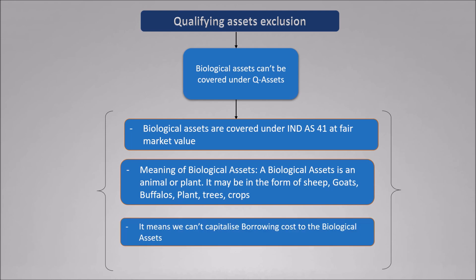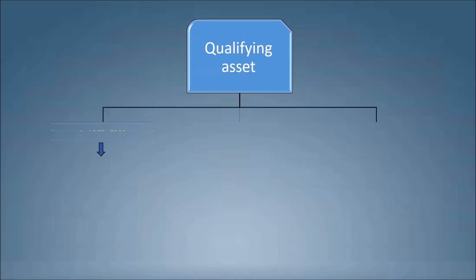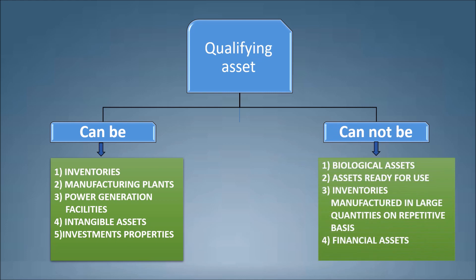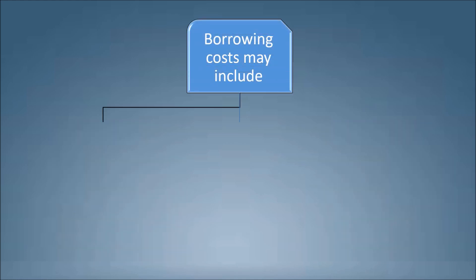Qualifying assets can include inventories, manufacturing plants, power generation facilities, intangible assets, investment properties. Qualifying assets cannot be biological assets, assets already ready for use, inventories manufactured in large quantities on a repetitive basis, or financial assets.